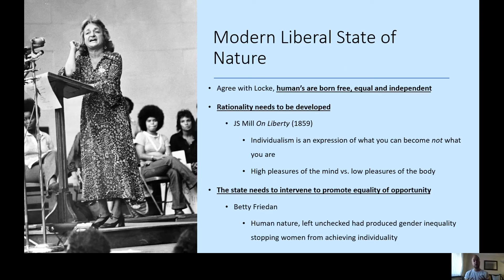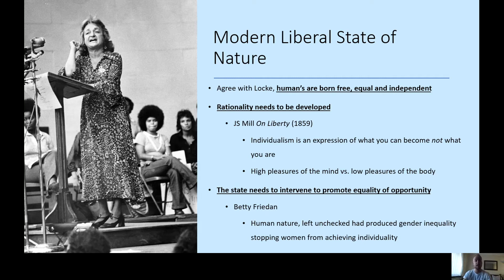Let's begin with the modern liberal conception of the state of nature. Modern liberalism develops from classical liberalism — they share foundational ideas but come up with slightly different interpretations. Modern liberals agree with Locke that humans are born equal, free, and independent, and that the central idea of liberalism should be the rights of the individual. However, while Locke had an optimistic view that people were naturally rational and needed no state intervention, modern liberals believed this view of rationality was too optimistic.